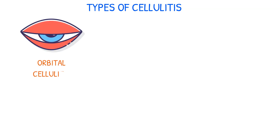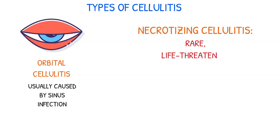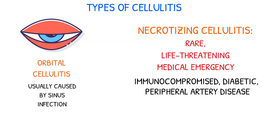Other types of cellulitis include orbital cellulitis, which affects the tissues surrounding the eye and is usually caused by a bacterial infection spread from the sinuses. Necrotizing cellulitis is a rare, life-threatening condition considered to be a medical emergency. Those who are immunocompromised, diabetic, or have peripheral artery disease are at high risk for developing necrotizing cellulitis.